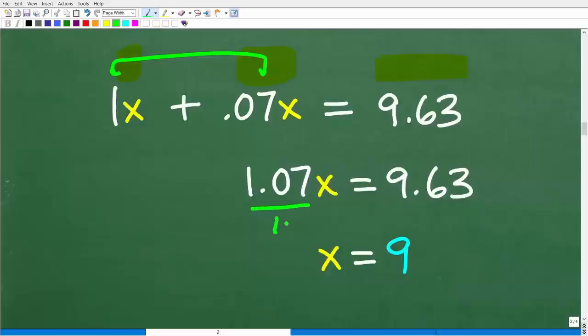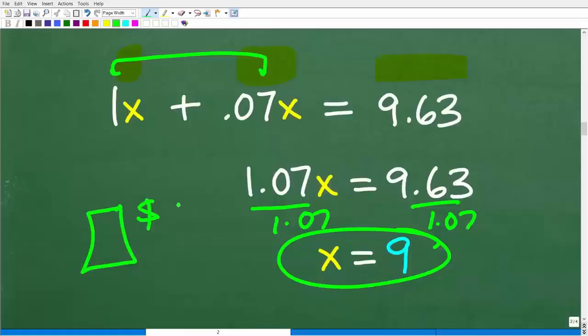And to solve for x, all we have to do is divide both sides of the equation by 1.07. So 9.63 divided by 1.07 is 9. So that means our lovely product here, whatever it is, is $9.